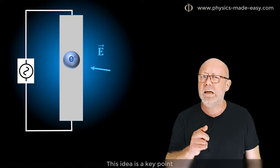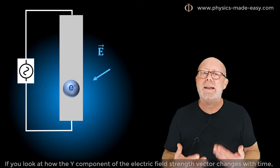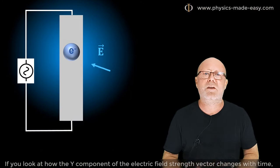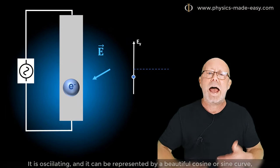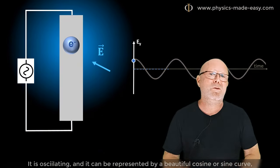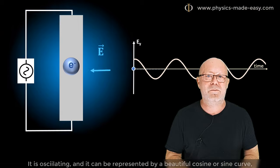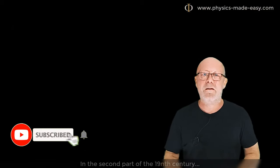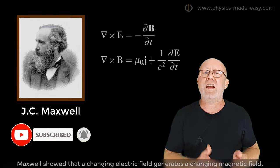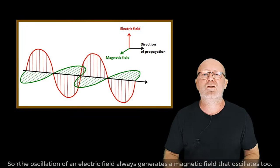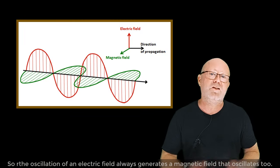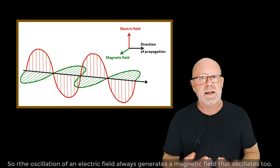This idea is a key point. If you look at how the y component of the electric field strength vector changes with time, it is oscillating, and it can be represented by a beautiful cosine or sine curve. In the second part of the 19th century, Maxwell showed that a changing electric field generates a changing magnetic field and vice versa. So the oscillation of an electric field always generates a magnetic field that oscillates too.